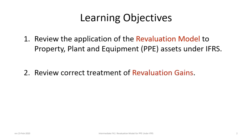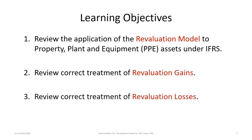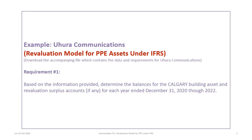The second objective is to review the correct treatment of revaluation gains, and the third is to review the correct treatment of revaluation losses. This tutorial is based on the Uhura Communications example, so please download the correct file and review the information before proceeding. The first requirement is to determine the balances for the Calgary building assets and revaluation surplus accounts for each year ended December 31, 2020 through 2022.